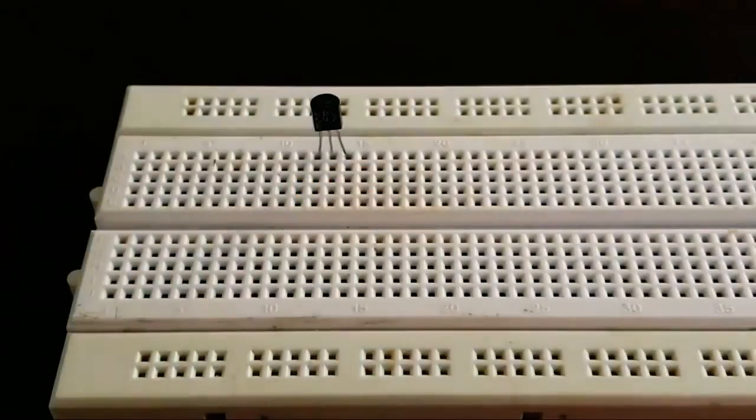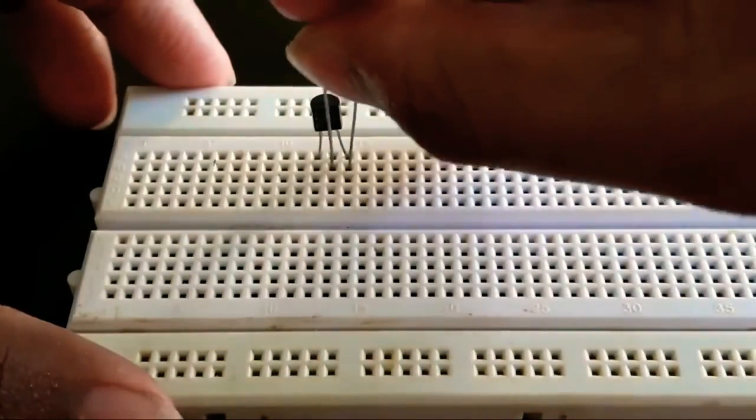Connect the two pins of the LDR from the base and emitter of the BC507 transistor.